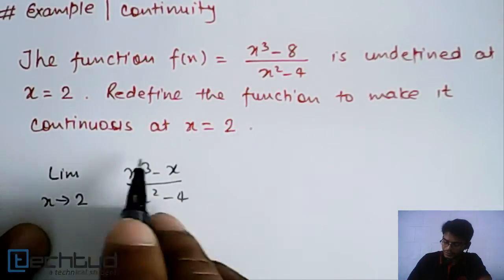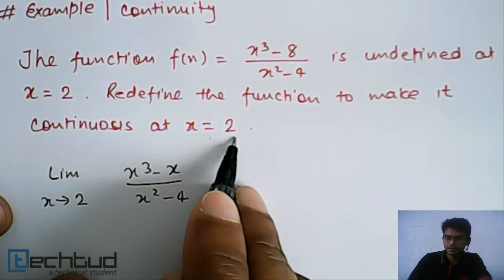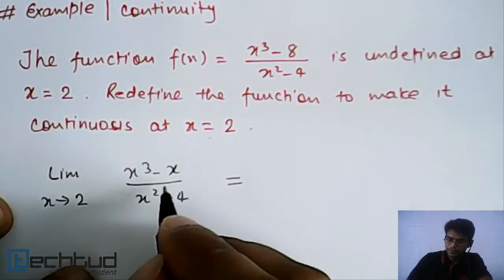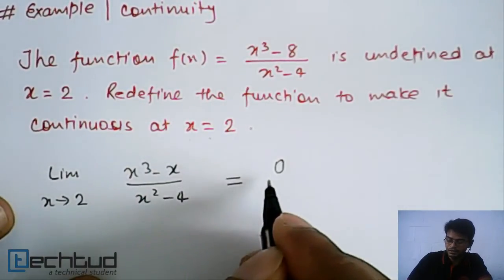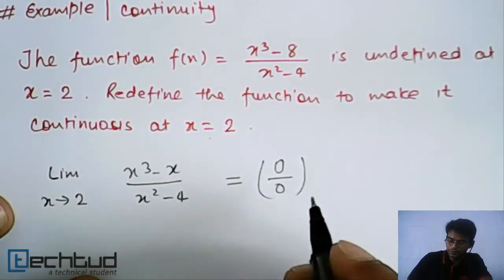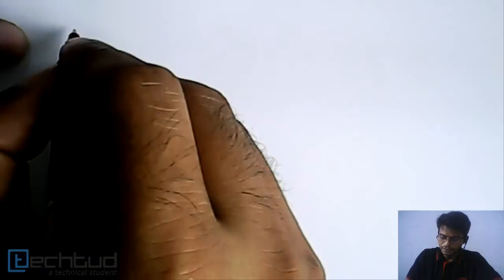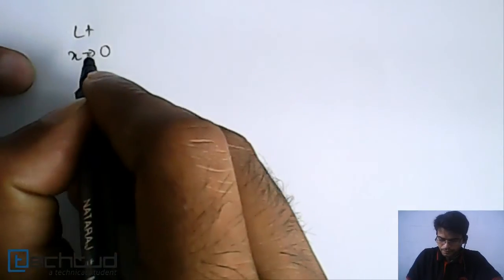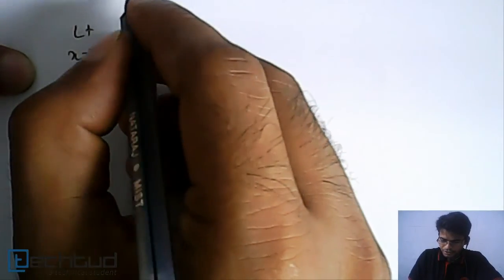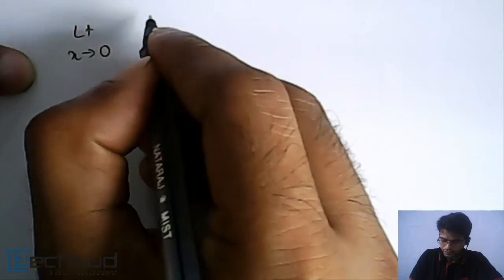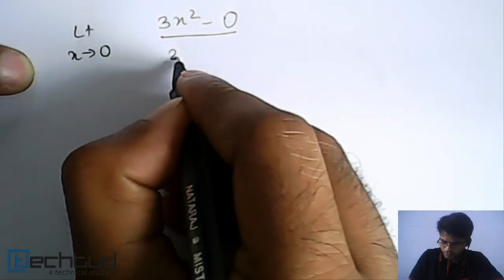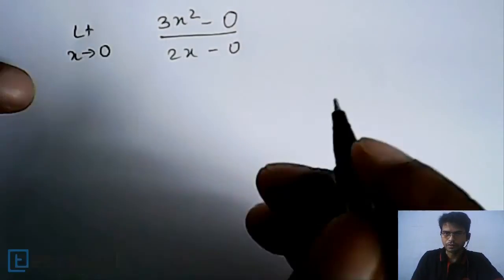We will find out the limit of this function at x = 2. As we can see, this is of the 0/0 indeterminate form, so we will apply L'Hôpital's rule. After applying L'Hôpital's rule, it becomes limit as x tends to 2 of (3x² - 0) / (2x - 0).